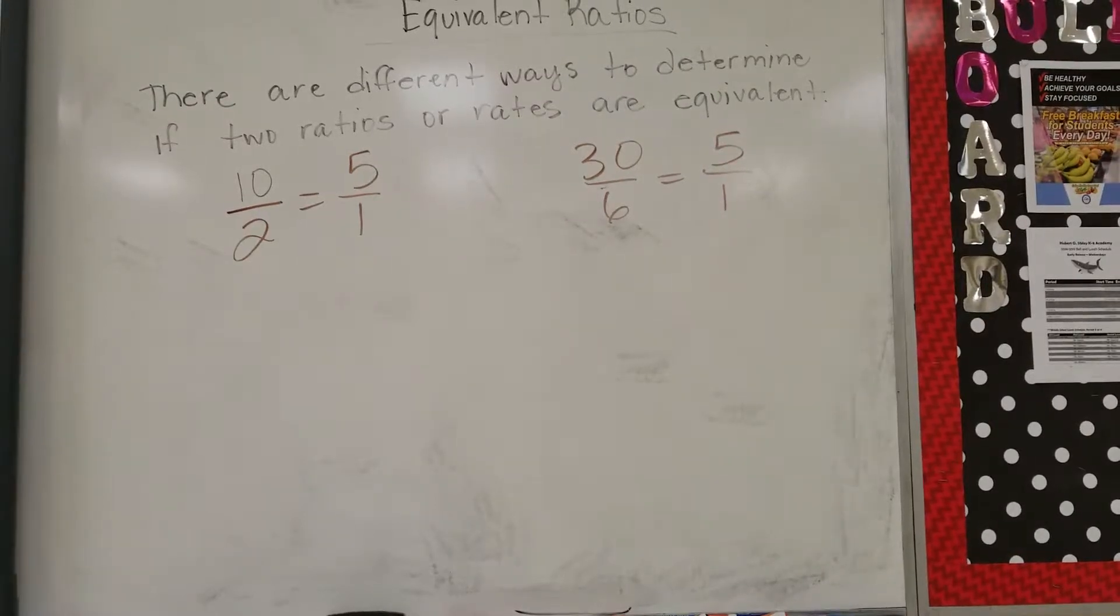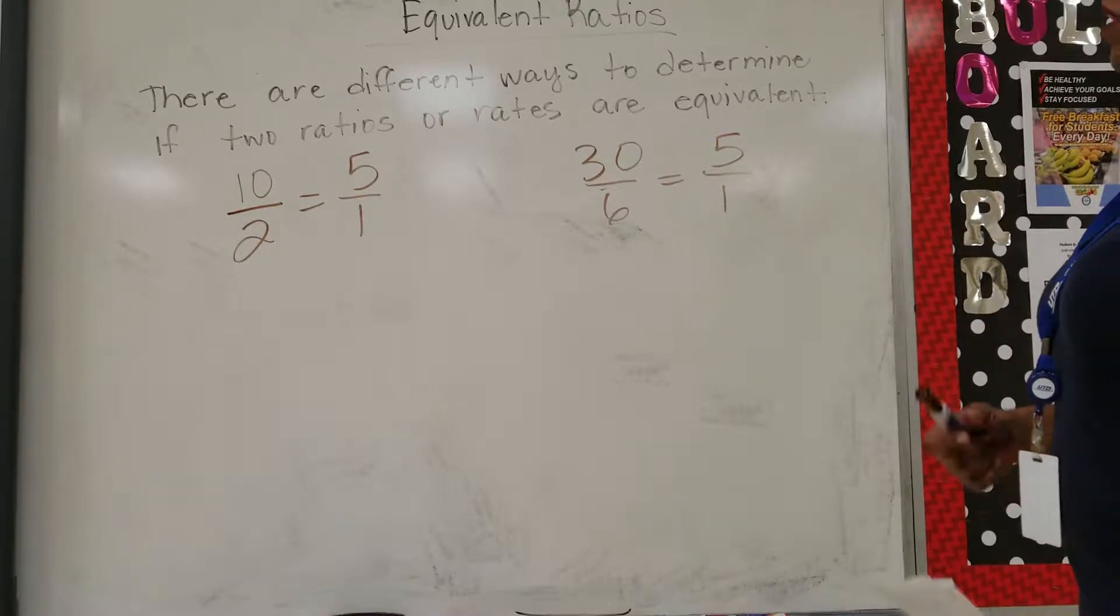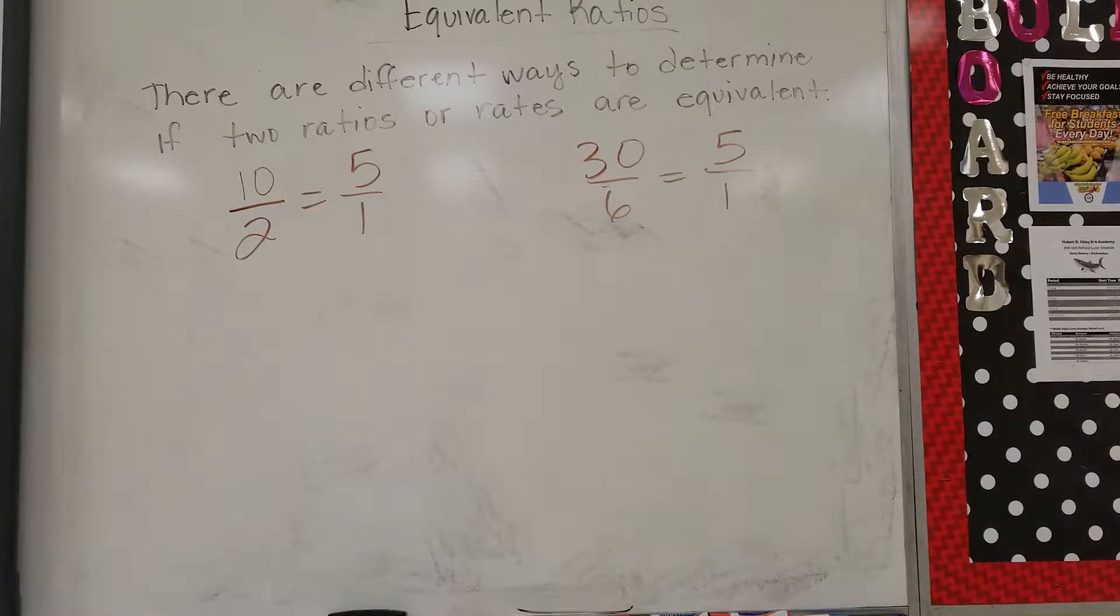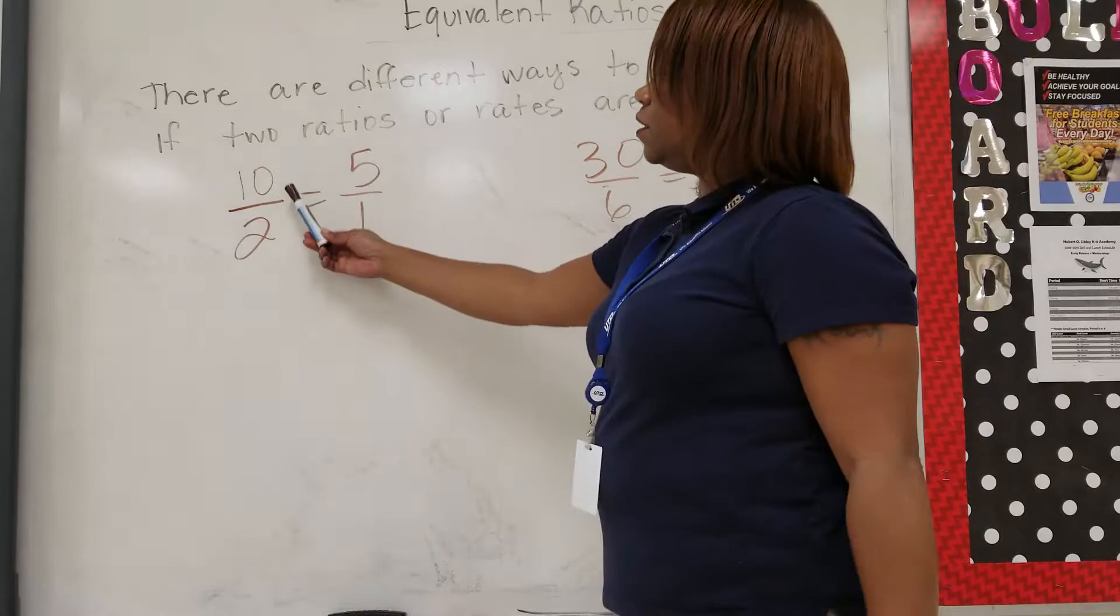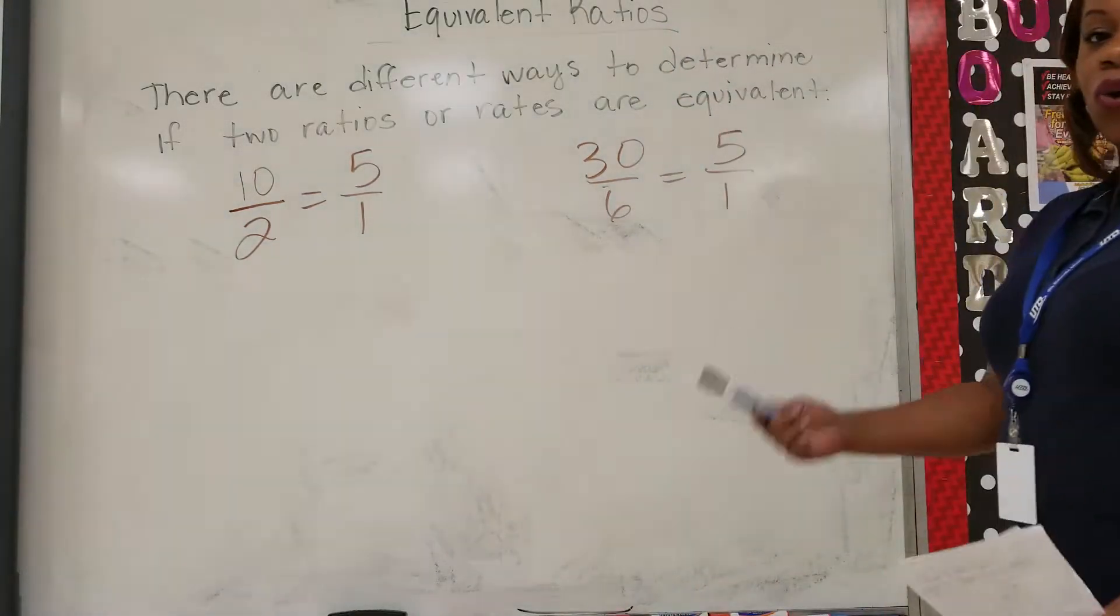Okay, hello sixth grade. All right, so now we'll be talking about equivalent ratios. There are different ways to determine if two ratios or rates are equivalent. Take here 10 to 2 and 5 to 1. Now one way to find out...